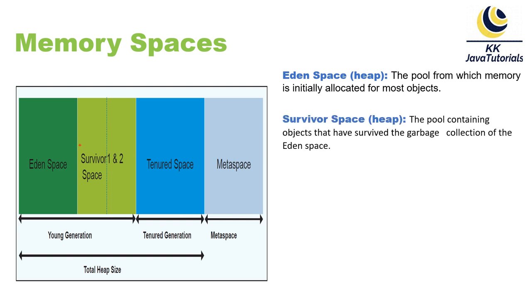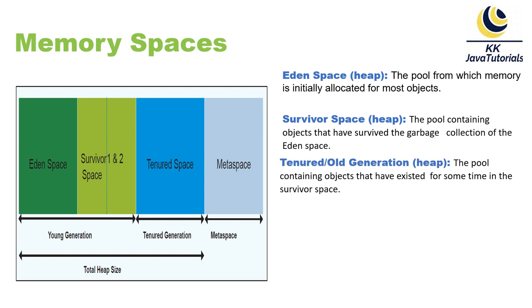Survivor spaces are still part of the young generation. Survivor one and survivor two are pools containing objects that have survived garbage collection of the Eden space. Whatever objects survive garbage collection in Eden space move into one of the survivor spaces. The tenured or old generation is also part of the heap — it contains objects that have existed for some time in the survivor space and are promoted to tenured or old generation.